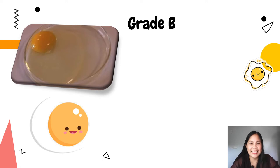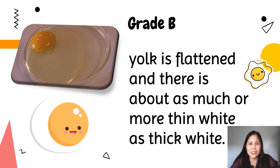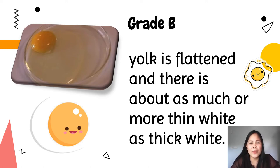Another grade is Grade B. The yolk is flattened and there is about as much or more thin white as thick white. Grade B eggs, when broken, spread greatly, having only a small amount of thick white. The white in general appears weak and watery. The chalaza is small or completely absent and the yolk is flat. This grade of eggs is normally purchased already broken in a variety of forms. They are suitable for scrambling or baking and as an ingredient with other foods.